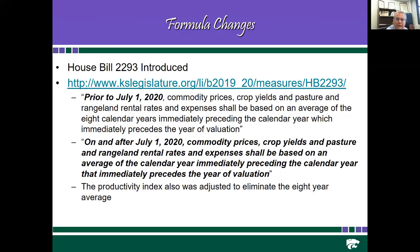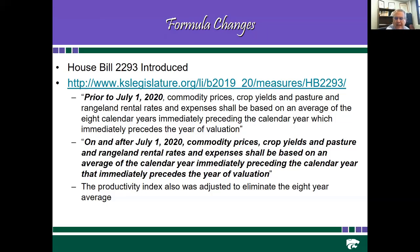In the last legislative session, House Bill 2293 was introduced. Previously, the law says commodity prices, crop yields, pasture, and rangeland rental rates and expenses shall be based on an average of the eight calendar years immediately preceding the calendar year that immediately precedes the year of valuation. The revised text says prior to July 1, 2020 the old method applies, and on and after July 1, 2020, rates and expenses shall be based on an average of the calendar year immediately preceding the calendar year that immediately precedes the year of valuation.